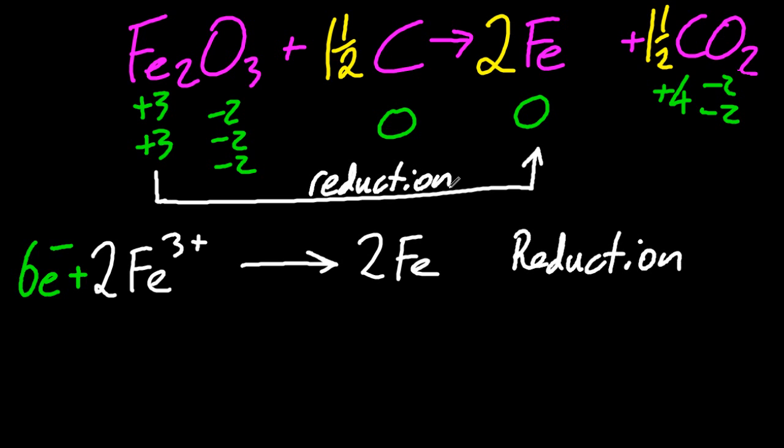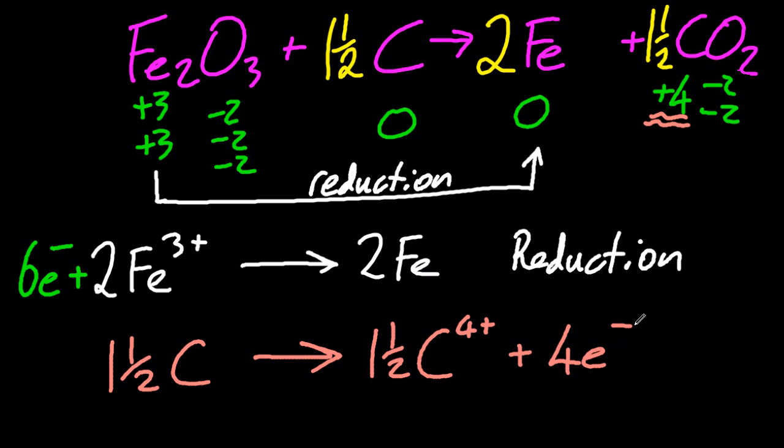Electrons are being gained. Look, on the left-hand side, I'm gaining six electrons. That's reduction. That carbon's a bit nasty. Four electrons? No. One and a half carbon four pluses. That's six electrons there. Oh, that's nasty.